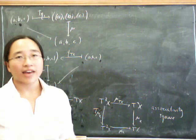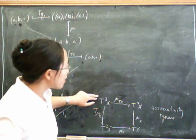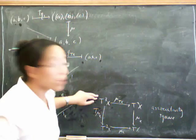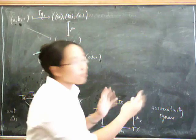OK, so what about the associativity square? T cubed of x is where we start. T cubed of x is words of words of words of x. I'm not probably going to try and write one of those down. I'm just going to wave my arms around a bit. So this is words of words of words of x. Now what's mu? Remember mu is concatenation, which is removing brackets.